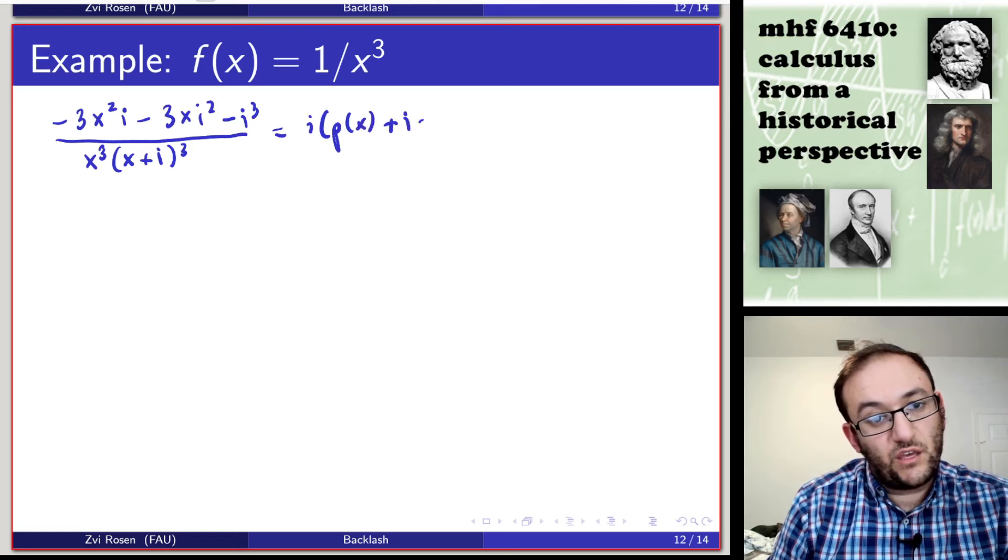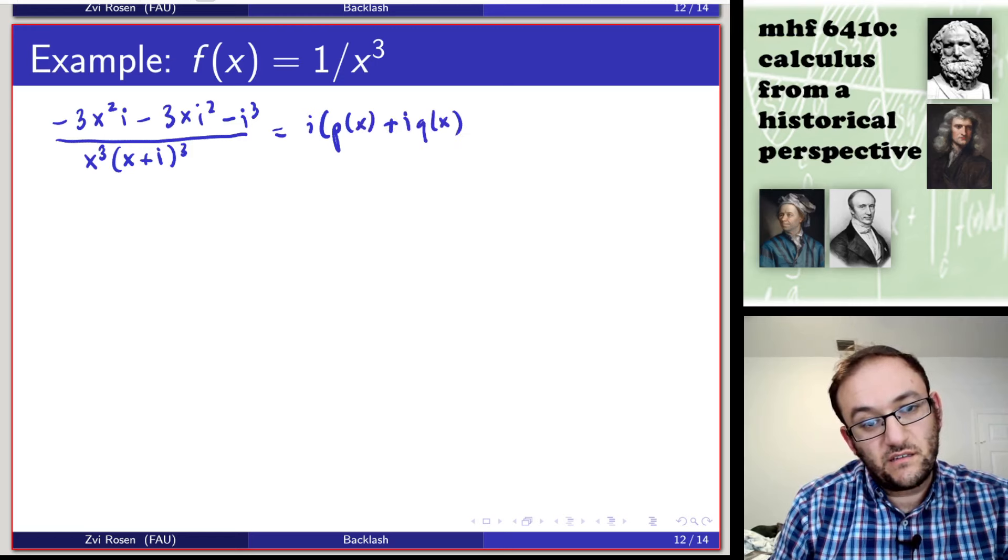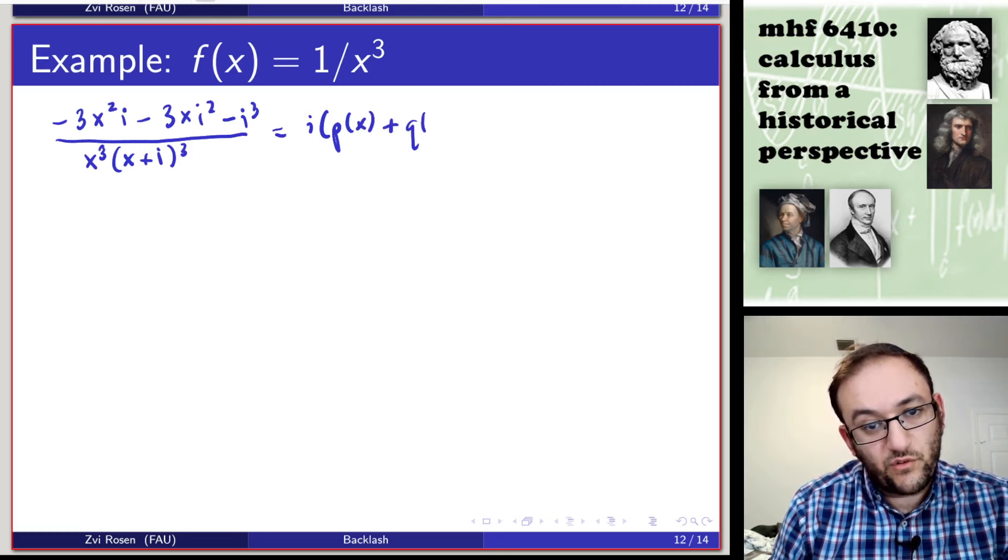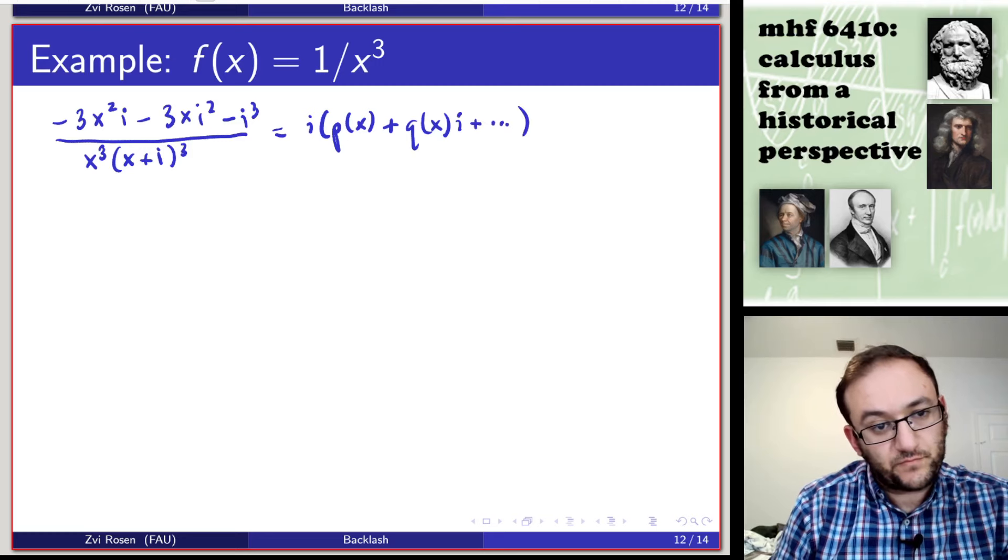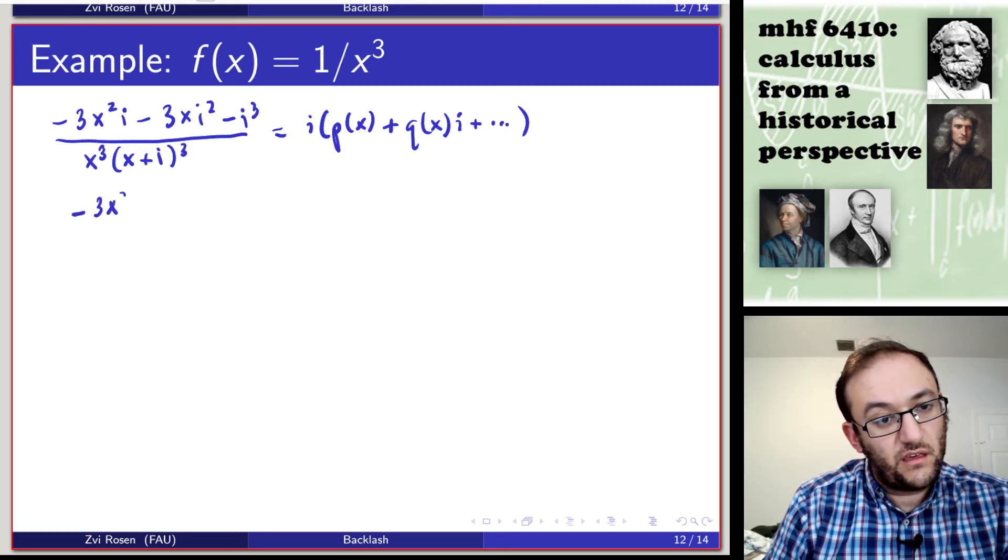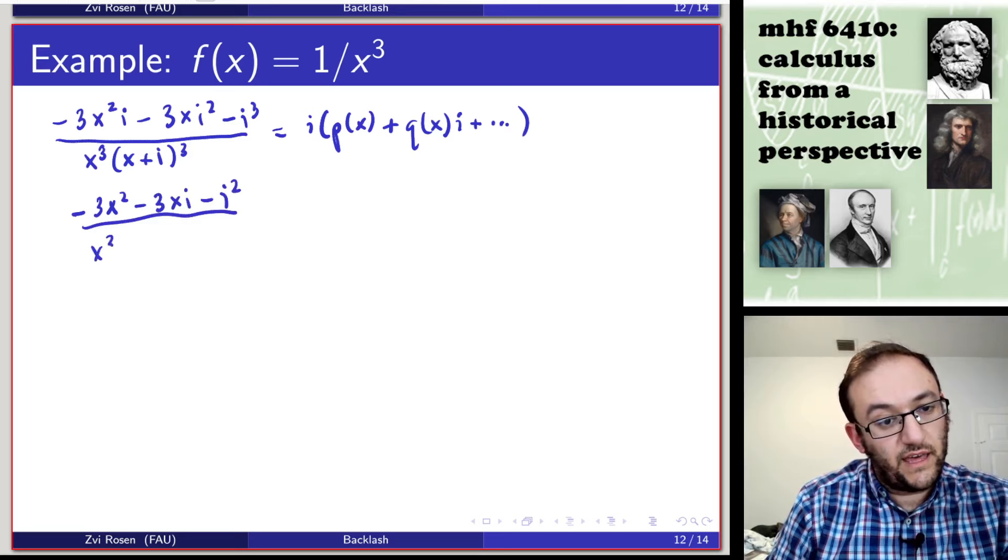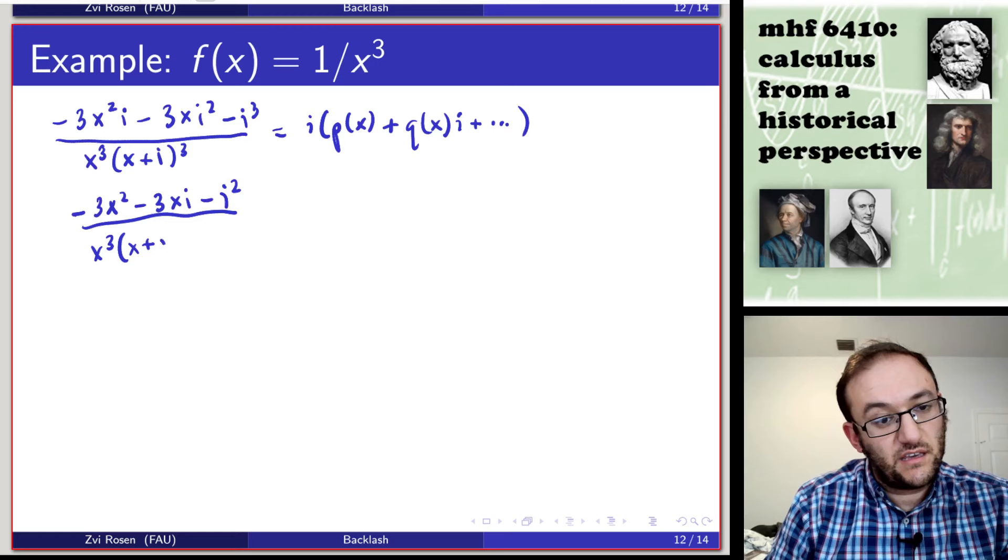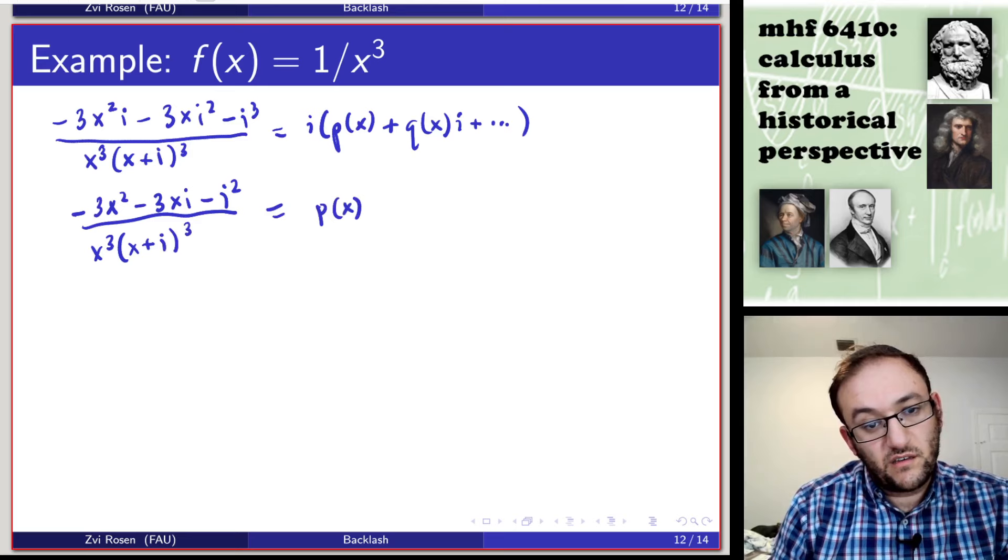Sorry, plus q of x i. That's how I had it before. Plus, et cetera. We're going to divide i on both sides of this equation to get minus 3x squared, minus 3xi minus i squared, all over x cubed, x plus i cubed, should be equal to p of x, plus q of x i, et cetera.